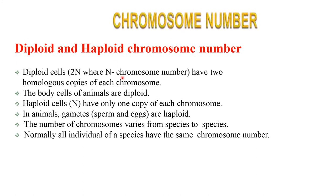Diploid and haploid chromosome number: diploid cells (2N, where N represents the chromosome number) have two homologous copies of each chromosome. The body cells of animals are diploid. Haploid cells have only one copy of each chromosome — in animals, gametes such as sperm or egg are haploid. The number of chromosomes varies from species to species, and normally all individuals of a species have the same chromosome number.